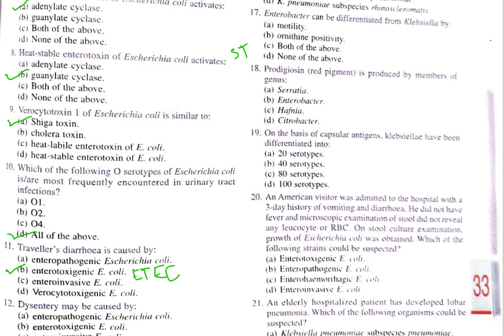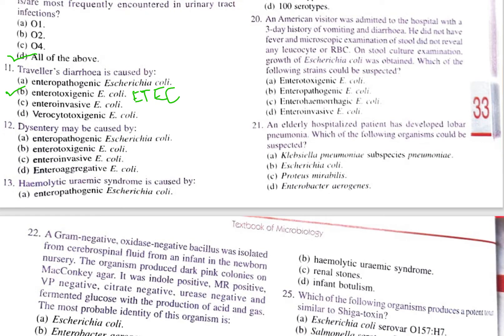Question number 12: dysentery may be caused by — A. Enteropathogenic E. coli, B. Enterotoxigenic E. coli, C. Enteroinvasive E. coli, D. Enteroaggregative E. coli. Among bacteria, dysentery is caused by Shigella dysenteriae, and among E. coli types, the one that can also cause dysentery is enteroinvasive E. coli (EIEC). So the correct answer is option C, EIEC.